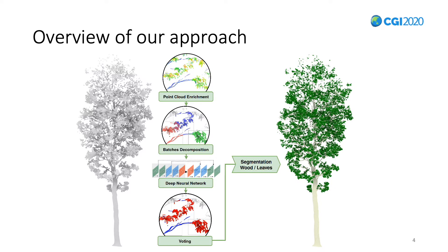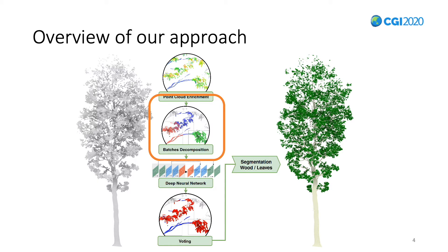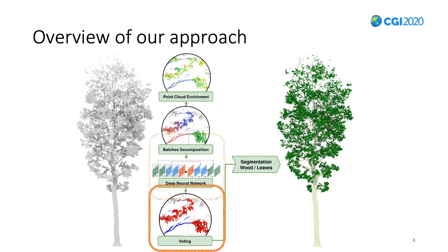Our segmentation method is made up of 4 steps. First, we enrich the point cloud with local geometrical information by assessing local descriptors at each point. Then we define the covering of the input data by overlapping batches of 3D points. Those batches are designed to feed a deep learning model, and this model predicts a label at each point of each batch. Because our batches largely overlap, each input point belongs to several batches and receives several labels. As a last step, we define a class decision process to obtain the final segmentation. Before detailing those 4 steps, I will remind some characteristics of the data we are dealing with.